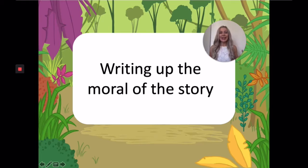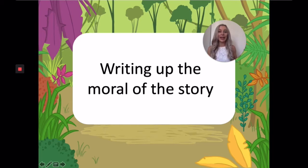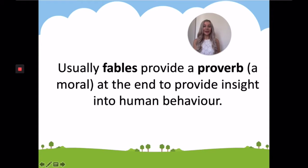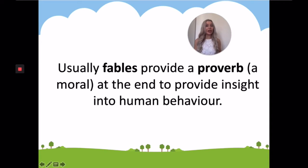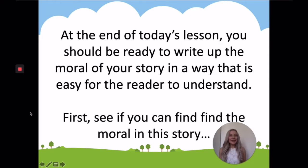We started to think about the moral of the story last week. Today we're going to think about that further, because once you've finished writing your fable completely, you're going to need to write the moral and explain to the reader what they should have learned by reading your story. Usually fables provide a proverb — a moral at the end — which gives the reader an insight into human behavior. It's often a lesson about what's right and what's wrong. By the end of today's lesson you should be ready to write up the moral of your story in a way that is easy for the reader to understand.